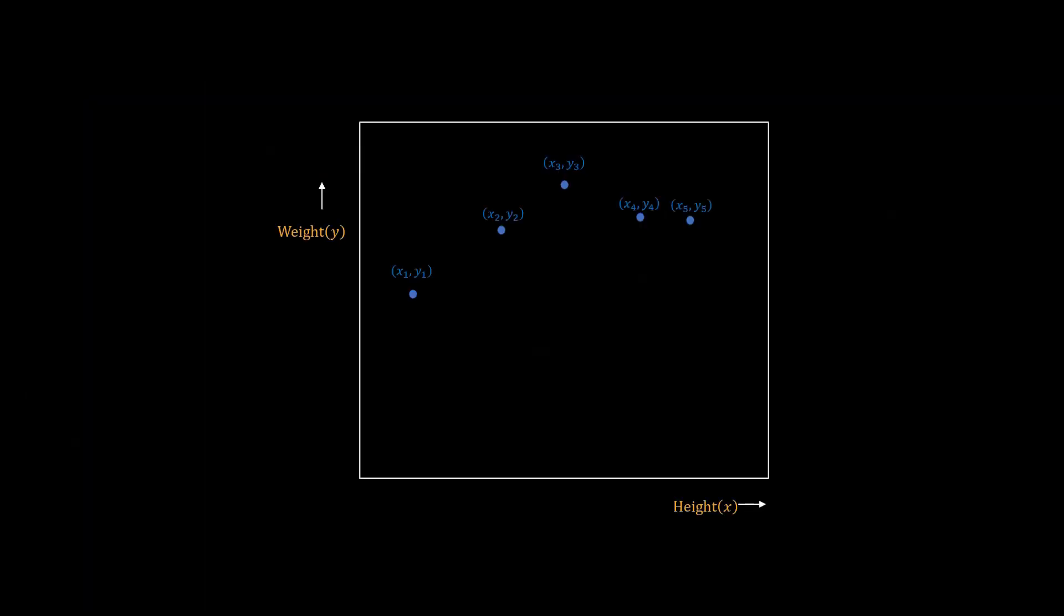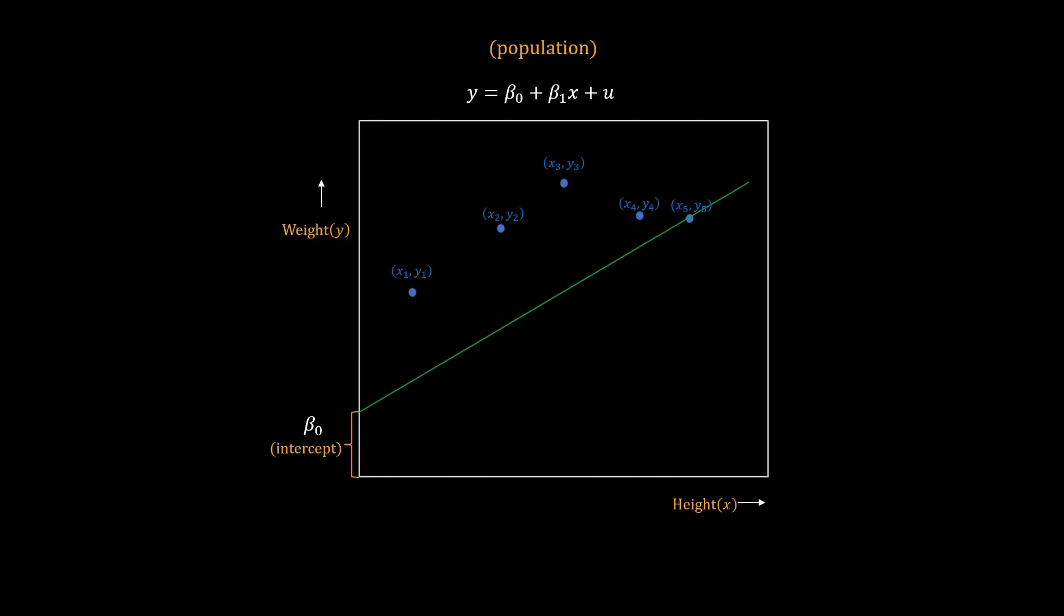Now, in the population, if y truly has a linear relationship with x, then every person's weight will be the same linear function of his height, including these 5 persons in our study. Graphically, a linear function is a straight line. Beta 0 controls the intercept of the line, and beta 1 controls the slope or steepness of the line. Beta 0 and beta 1 together define the line or the linear relationship.